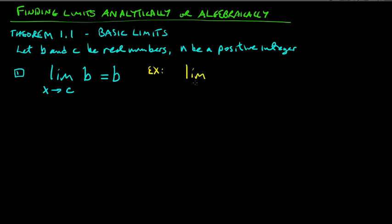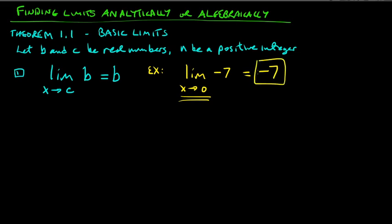Let b and c be real numbers, and let n be a positive integer. The first rule says: if we take the limit as x approaches c of the constant b, then the answer is b. Here's an example: the limit as x approaches 0 of −7. x is getting close to 0, but −7 is always −7 — it's a constant.